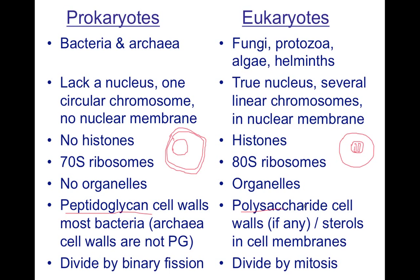Eukaryotes have a polysaccharide cell wall. Poly means many, and saccharide is a type of sugar. Some of these cell walls are easy to penetrate and some are harder to penetrate.